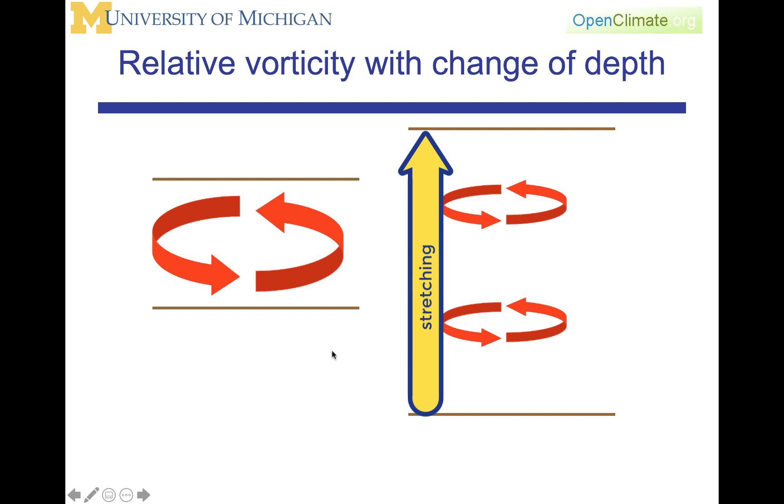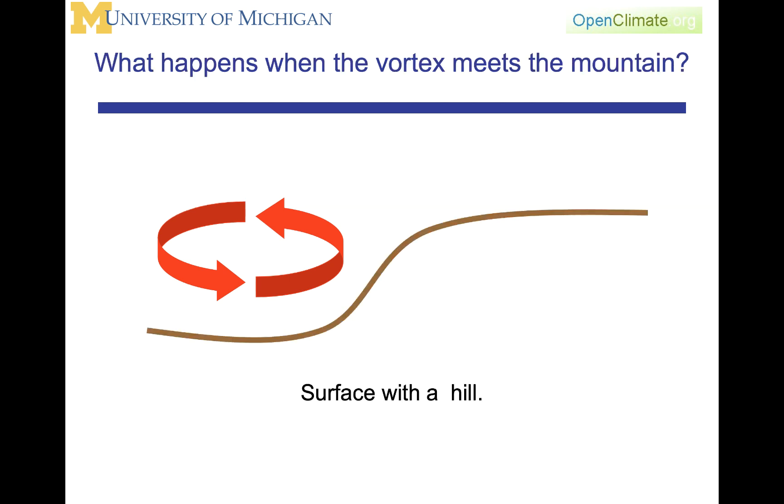and one of the things that you see has to happen is that the vorticity has to change, circulation has to change as the column stretches or compresses. We're going to be looking extensively at what happens when a vortex or the wind has a surface that has some gain in elevation in it, because this will be analogous to flowing over a mountain, which is one of the defining characteristics of the dynamics of the planet.